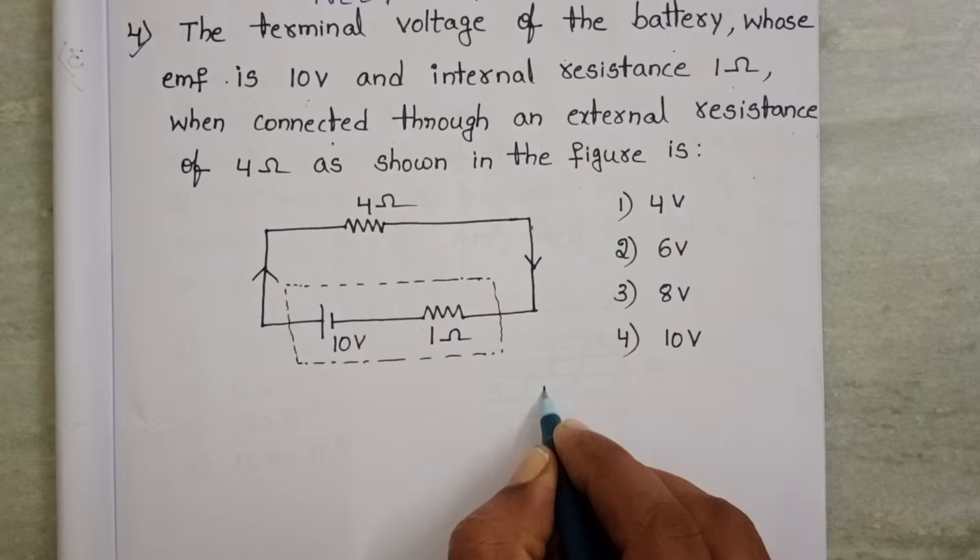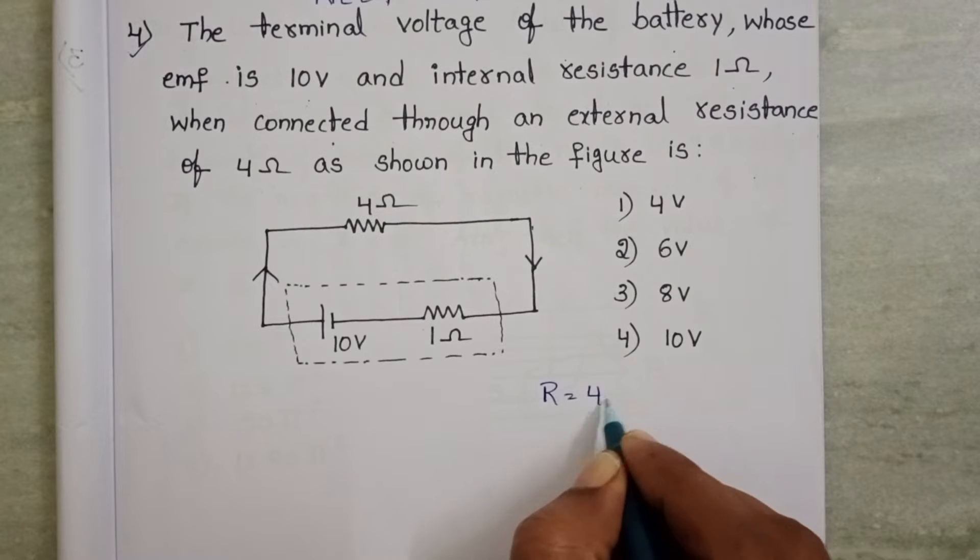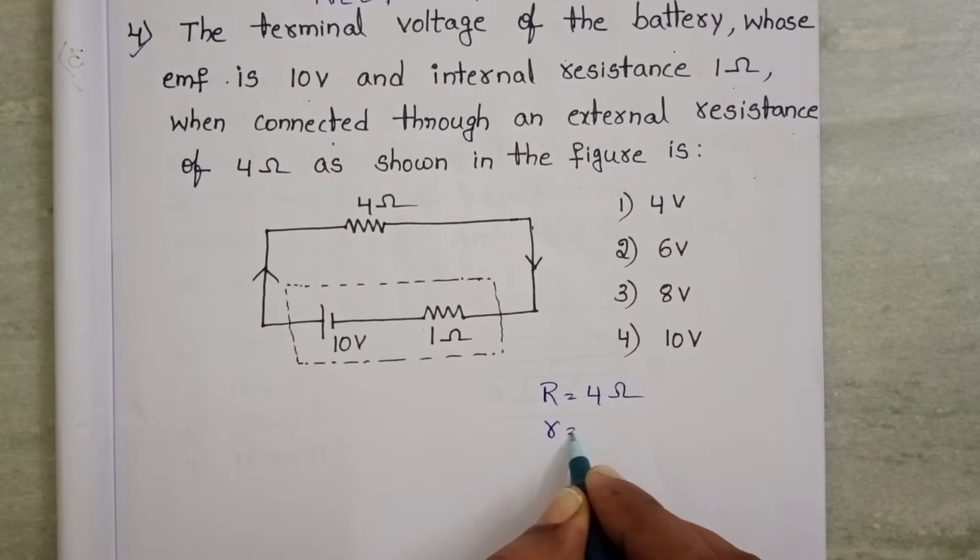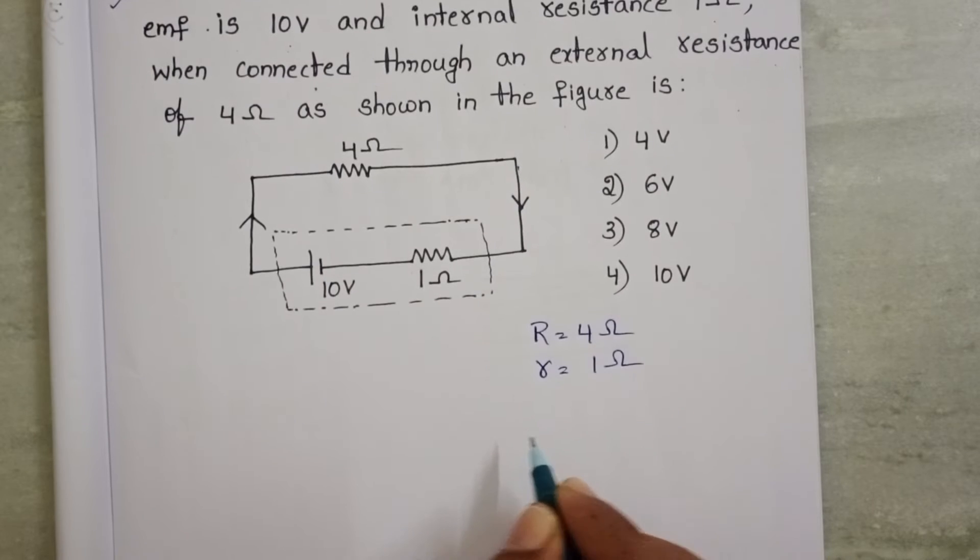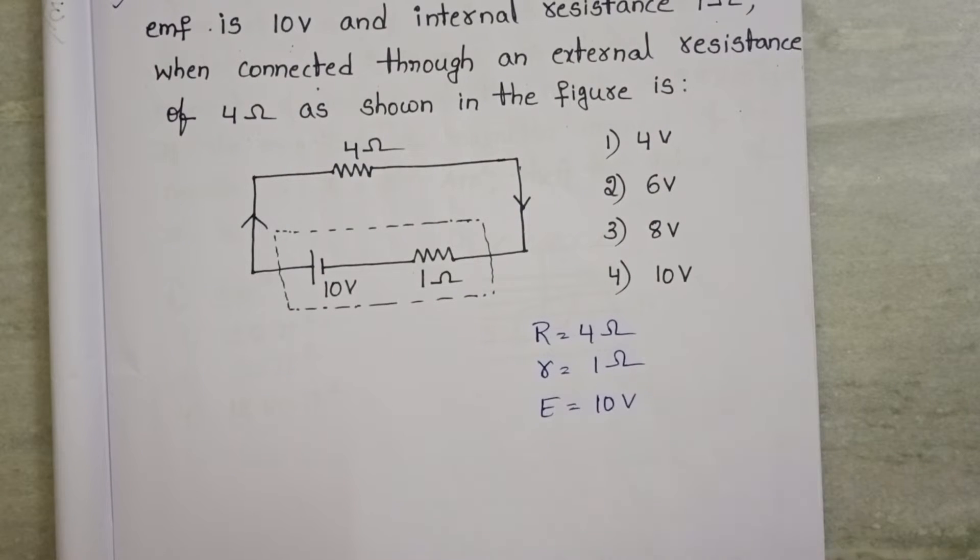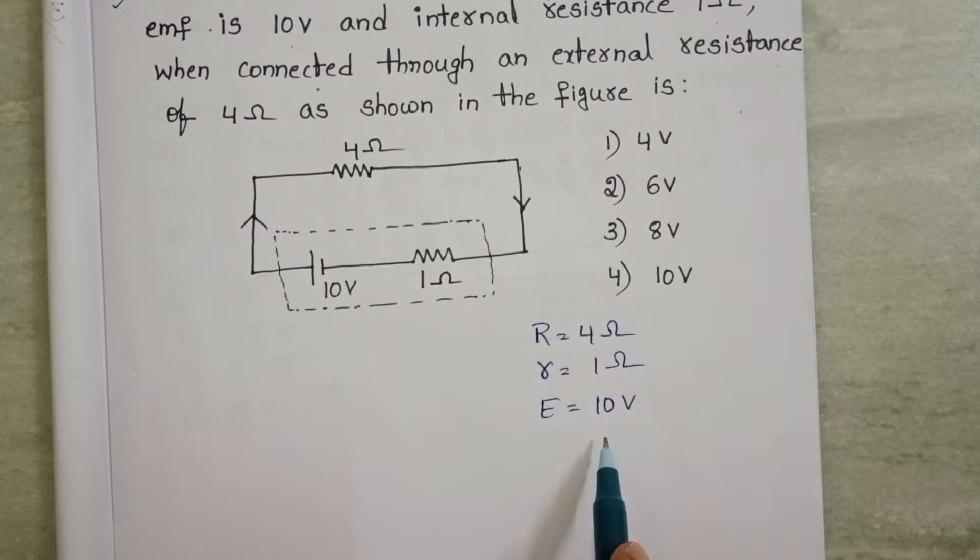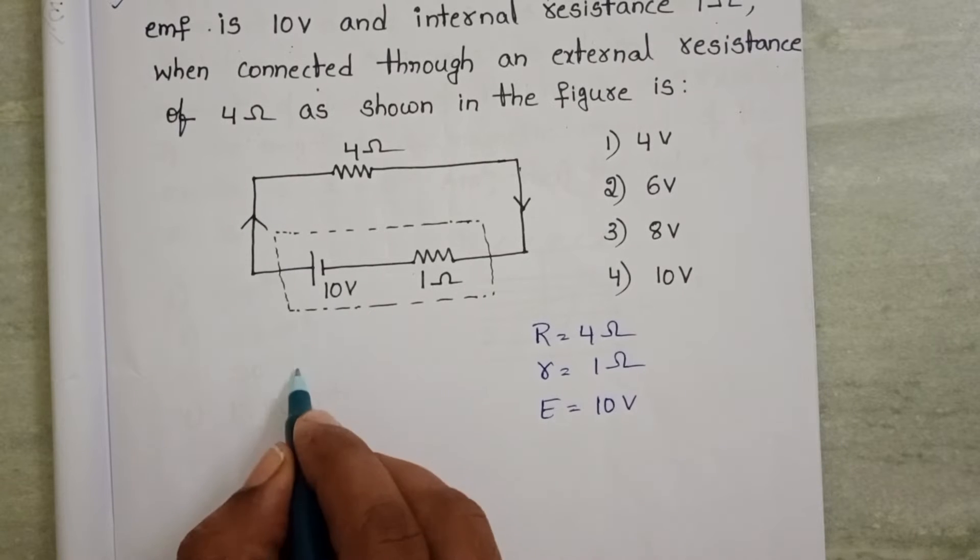Here we know the external resistance is 4Ω and internal resistance is 1Ω. EMF of the battery is 10V. By using this information we have to find out the terminal voltage.